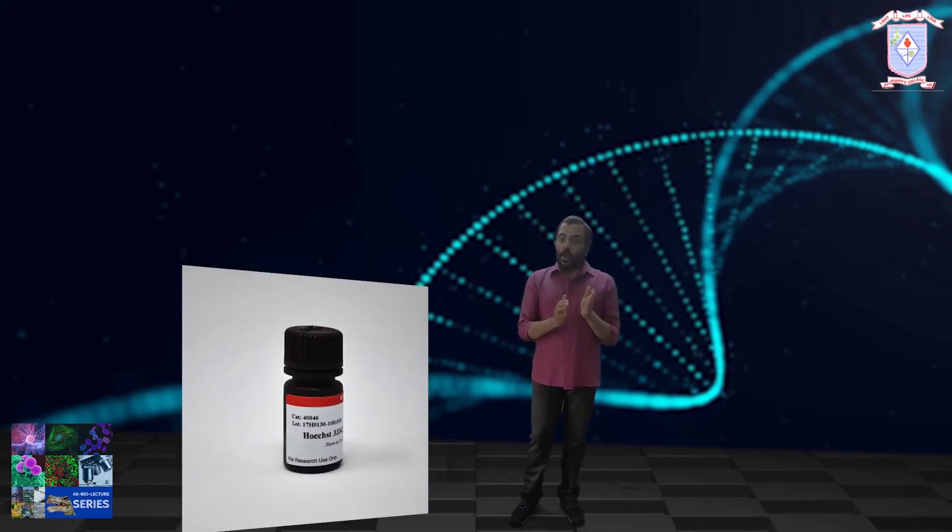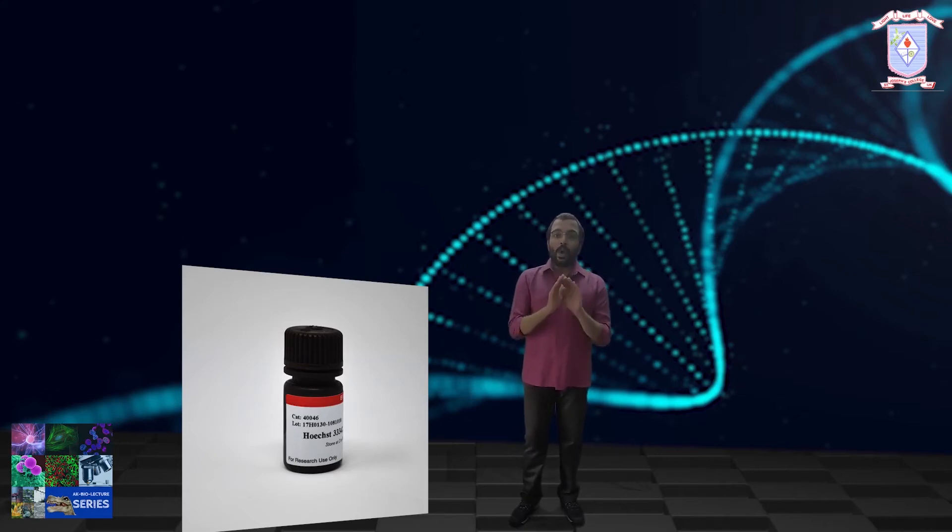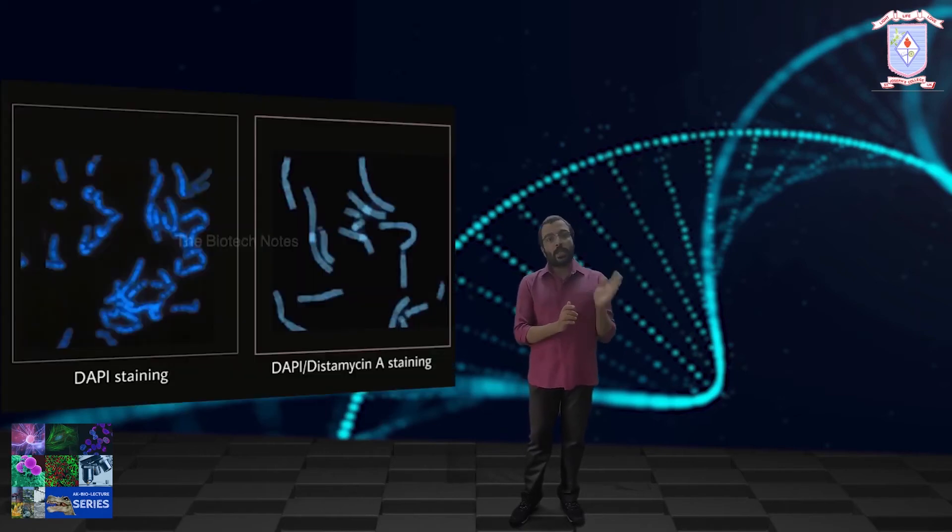DAPI in combination with Distamycin A can be used for labeling a specific subset of C-bands. Distamycin A is a non-fluorescent antibiotic. This technique provides more resolution to the centromeric region as well as the heterochromatinized regions of chromosomes.